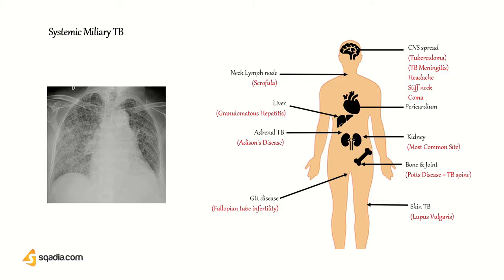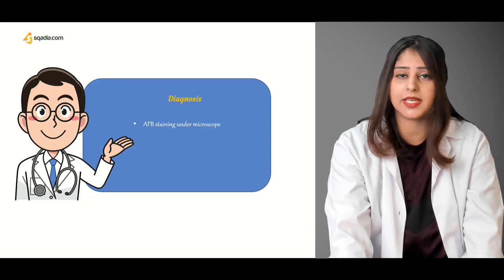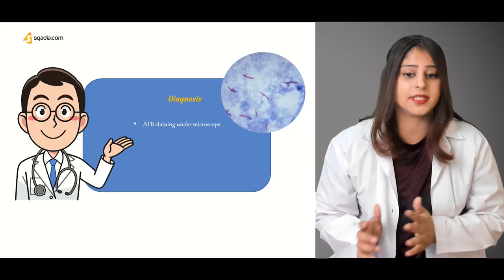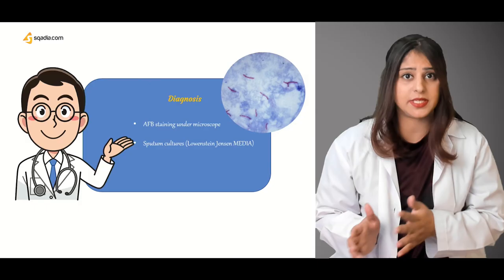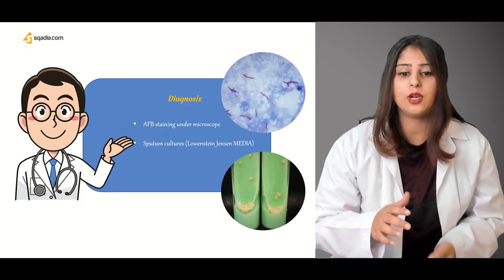In the liver it can give rise to granulomatous hepatitis. Diagnosis of Mycobacterium tuberculosis cannot take place under an ordinary microscope — it requires specialized stains. Diagnosis uses AFB staining called Ziehl-Neelsen or ZN staining. Sputum cultures can also be taken; these cannot be grown on ordinary culture media. A specialized culture medium called the Lowenstein-Jensen medium is required for the growth of Mycobacterium tuberculosis.